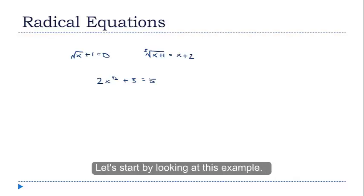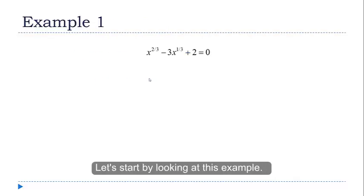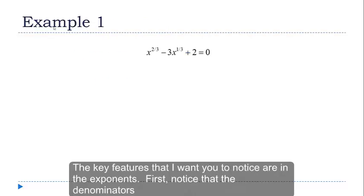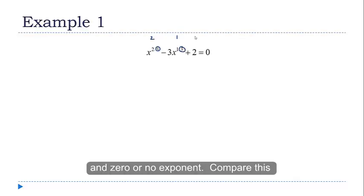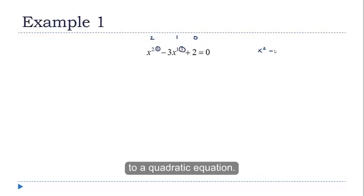So let's start by looking at this example. Now the key features that I want you to notice are in the exponents. First, notice that the denominators are all 3. And with the numerators we have 2, 1, and 0 or no exponent. And I want you to compare this to a quadratic equation.